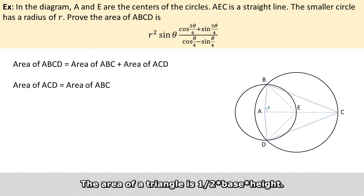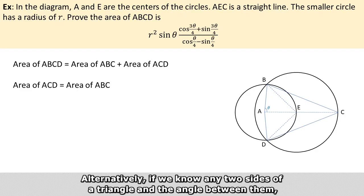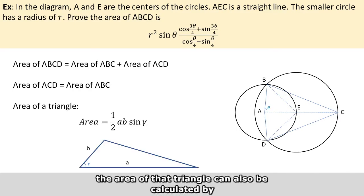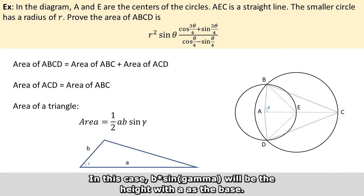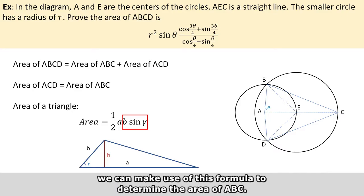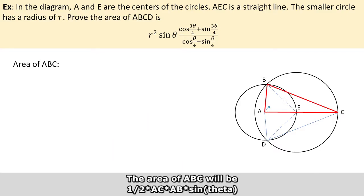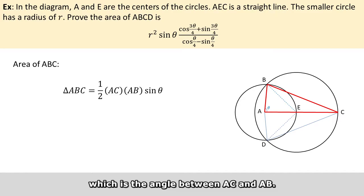The area of a triangle is half times base times height. Alternatively, if we know the two sides of a triangle and the angle between them, the area can also be calculated as half times the two known sides times the sine of their included angle. So in this case, B times sine of gamma will give the height with A as the base. Because we are given an angle in the diagram, we can use this formula to determine the area of ABC. The area of ABC will be half times AC times AB times sine of theta, which is the angle between AC and AB.